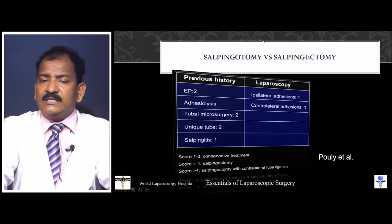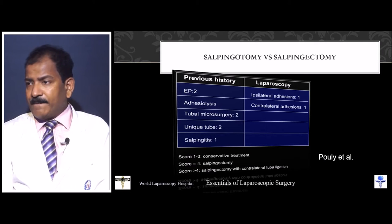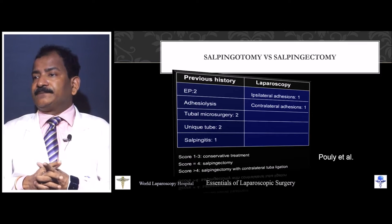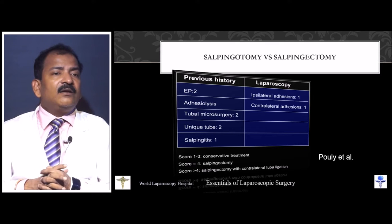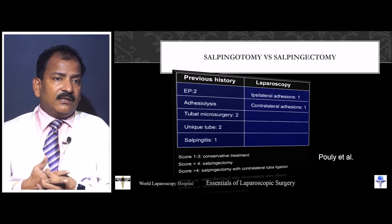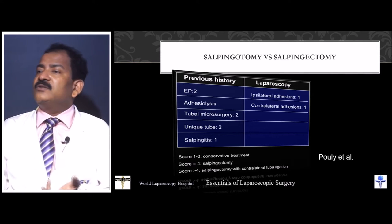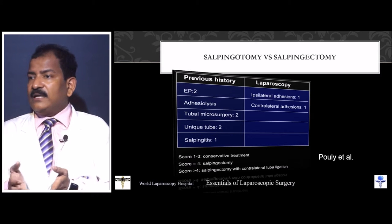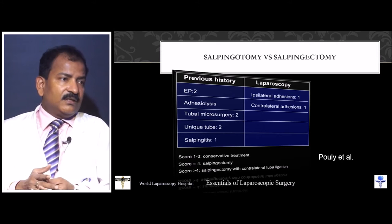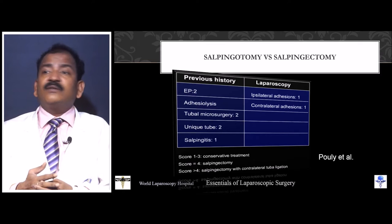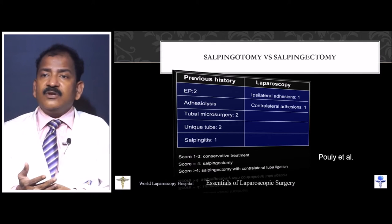In tubal surgery for ectopic, you have two options: salpingotomy and salpingectomy. One criterion for selecting between them is the diameter of the trophoblast and the beta-HCG level. If the diameter is more than 6 cm, there is no point doing salpingotomy because the tube is no longer functional — it is destroyed. If beta-HCG is more than 15,000 IU, we should do definitive management and not try to save the tube.